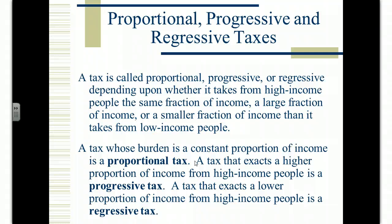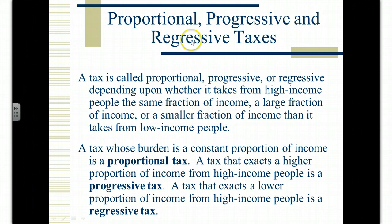When looking at taxes in terms of efficiency and equity, taxes can be proportional, progressive, or regressive — this simply has to do with the percentage of income they take. A proportional tax takes the same percentage; a progressive tax takes an increasing percentage as income rises; and a regressive tax takes an increasing percentage from those on lower incomes — a smaller fraction from those on higher incomes. So it has to do with the burden placed on people in different income categories.